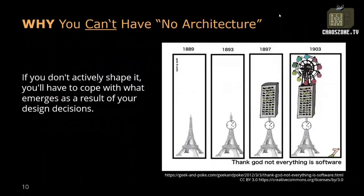The problem is: you can choose to ignore architecture — that's fine if you have reasons. But you cannot have no architecture. You always have an architecture. If you don't care about the architecture of the system you create, it takes a course of its own. If you don't actively shape it, you have to deal with the results of your design decisions as they are, whatever form they take, and this can become very, very nasty in the end.